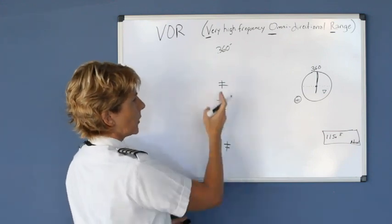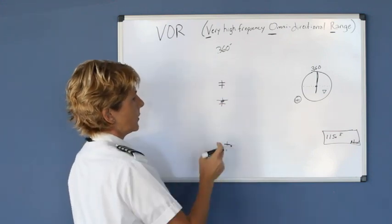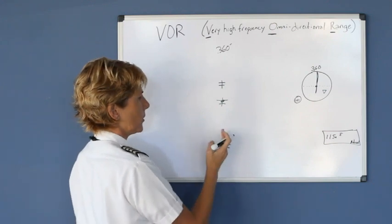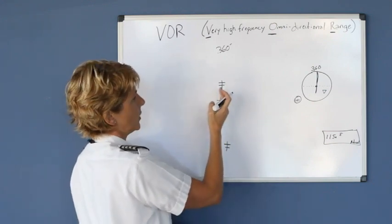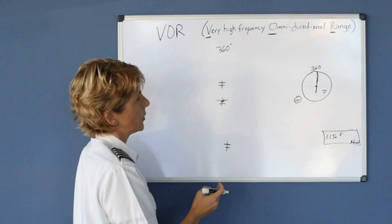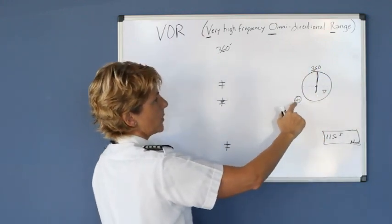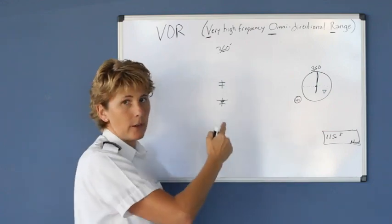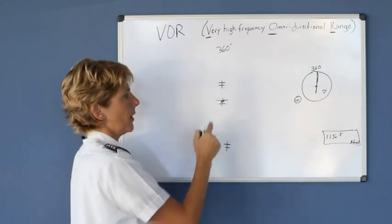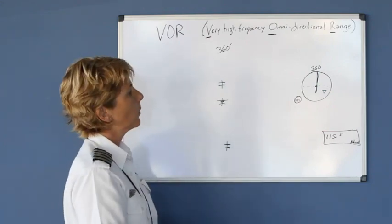So what we've done is we just selected the course we want to fly in relation to that VOR, and we flew to the station, then we were over the station, and then we simply flew from the station. But we never changed our course because that was the bearing we selected to travel across the ground in relation to that ground-based nav aid, the VOR.